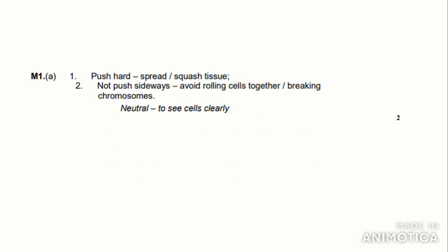So if we look at the mark scheme, the first marking point: push hard so spread or squash the tissue, which we wrote. The second marking point: not pushing sideways means avoiding rolling the cells together or breaking the chromosomes. It doesn't matter which one of these you put, you still get the marks. It says here neutral to see cells clearly. So the examiner doesn't really like it if you write that, as it is not clear enough what you're writing about. So let's go on to the next question.